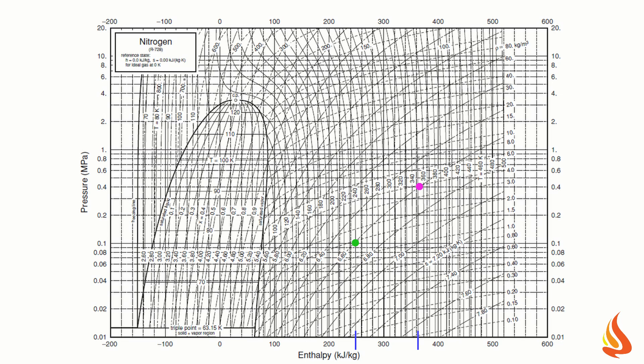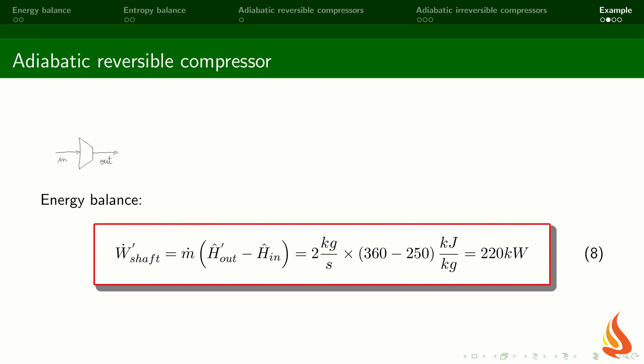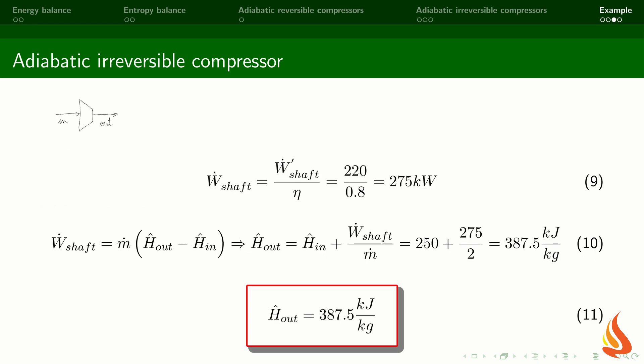The reading locations are identified by the small blue vertical bars on the enthalpy axis. Using these specific enthalpy values and the mass flow rate, we find that the power of the adiabatic reversible compressor is 220 kW. We now divide this value by 0.8, which is the efficiency, and find that the power of the adiabatic irreversible compressor is 275 kW.